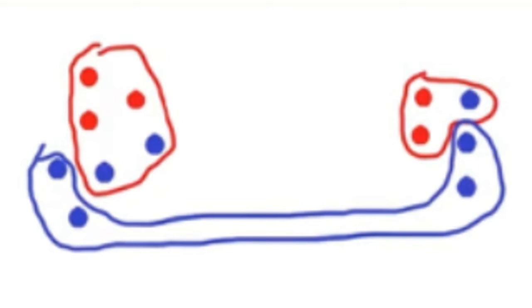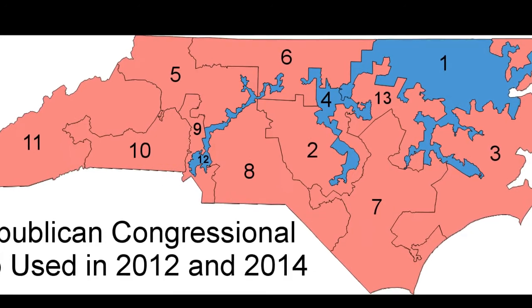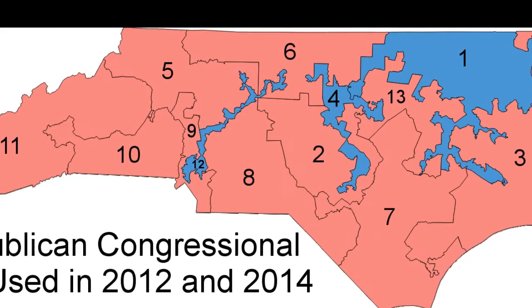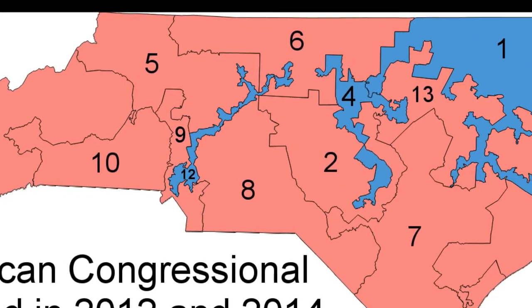You might be asking: what's that long blue thing? Why is that county so long? Well, in North Carolina, this was done so African Americans had a seat in Congress.